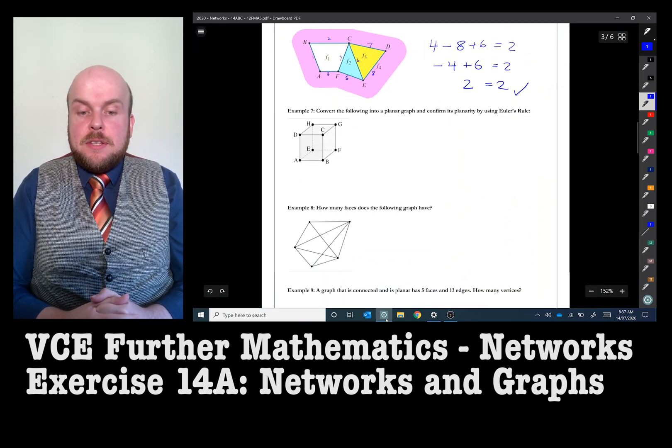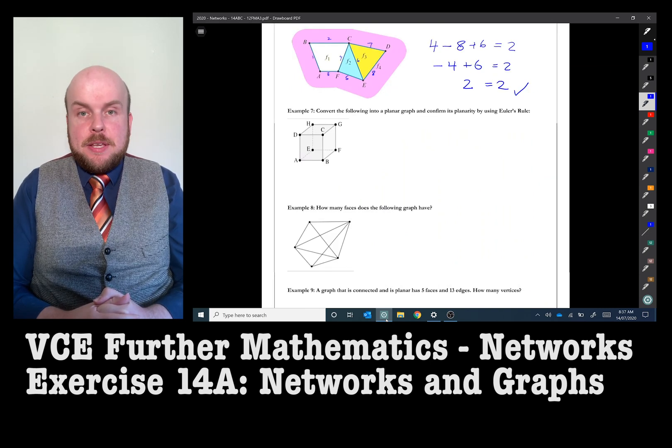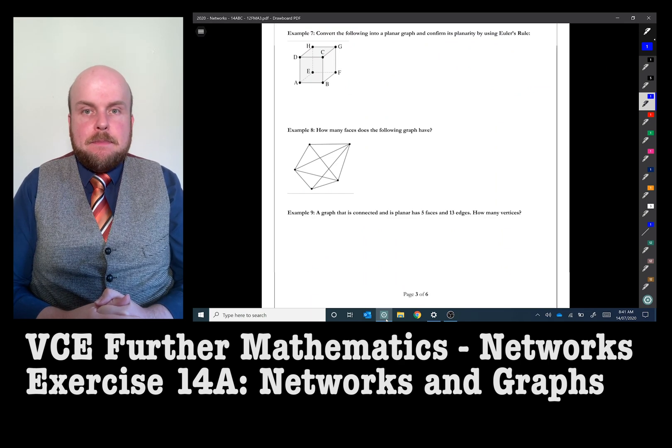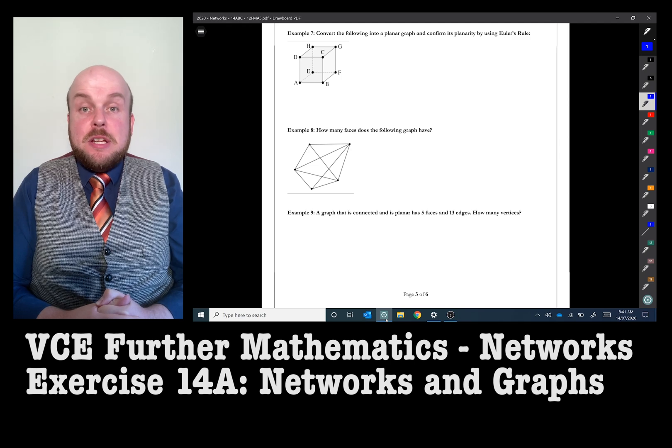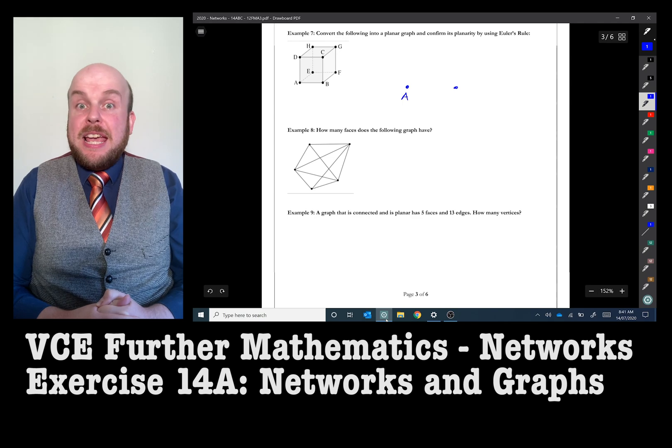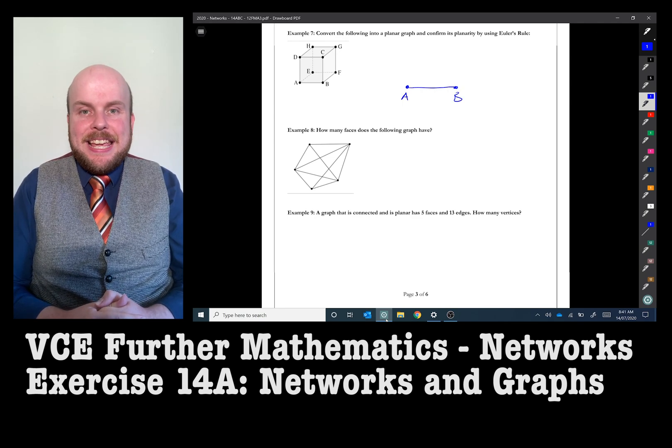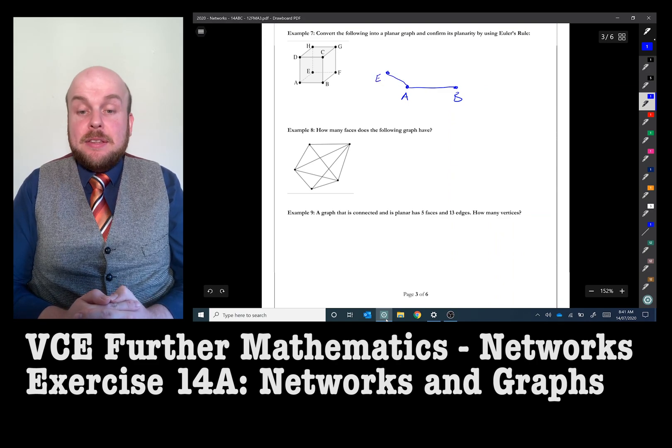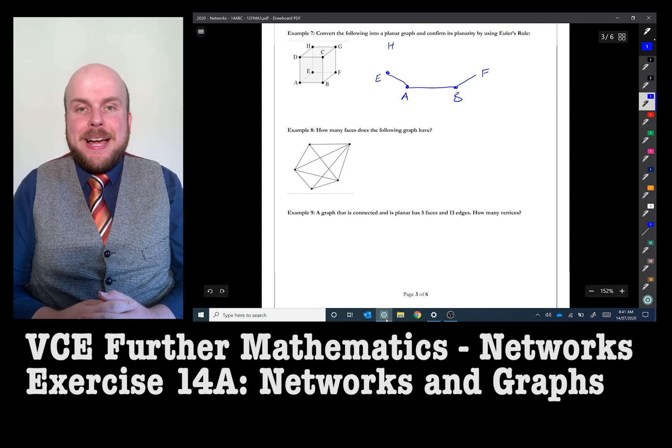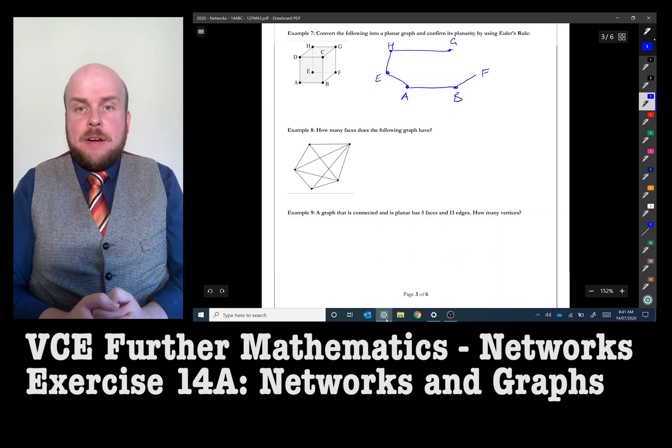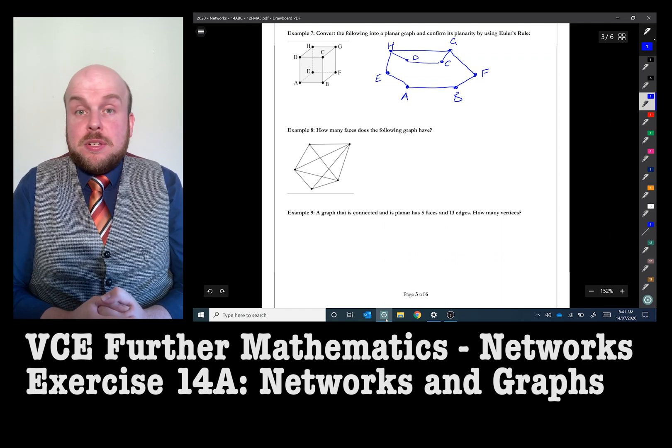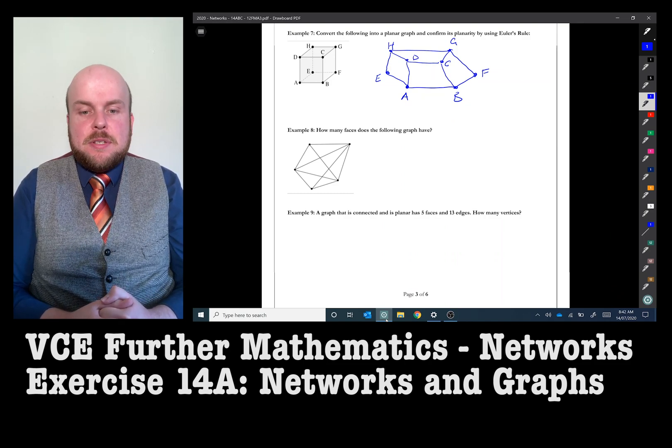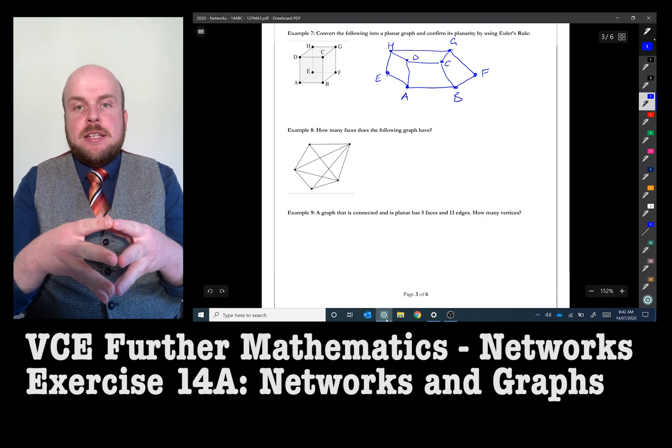In this next example, I have to convert the following into a planar graph and confirm its planarity by using Euler's Rule. Remembering that planarity just means is it planar or not. You could solve this multiple ways. I found it was particularly helpful to be able to redraw it by moving one of the vertices. One of the easier ways to solve this would be to move the vertex E outside to the left of the box. By redrawing this network, I'm able to simply count the faces by counting all of the spaces that are bound by edges. By bound, I mean the outsides are all edges. And, of course, the outside space as well. I could have also just used the rule as well to determine this. However, the question did specify that they wanted the graph to be converted into a planar graph. So if I want to do that, I need to make sure there are no overlapping edges.